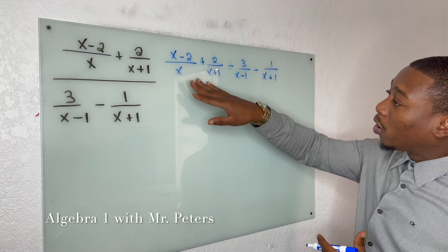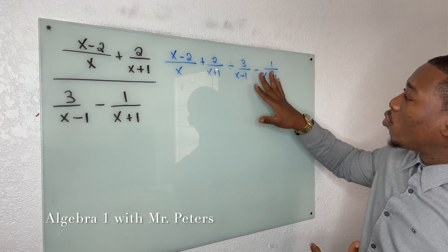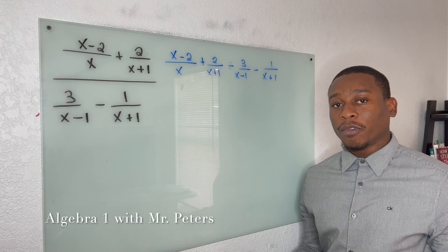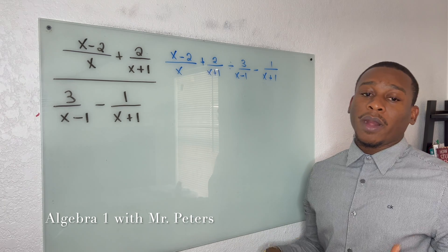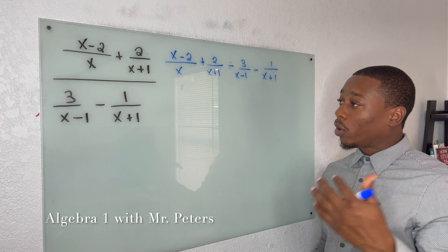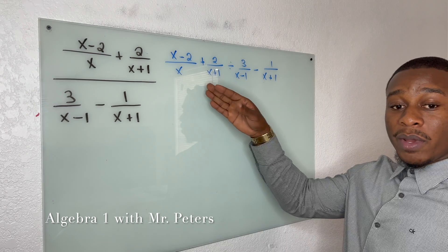Can we factor anything? So I look at my denominator, I look at my numerator, there's nothing for us to simplify. So now what we want to do is we want to go back and find common denominators.